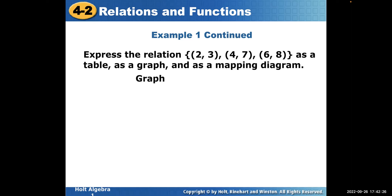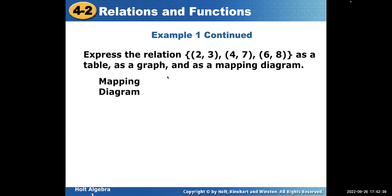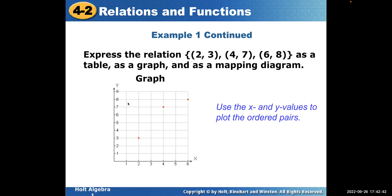Now let's graph it. Take the same points and plot them on a coordinate graph. The first number is X, so go where X is 2 and Y is 3 — where they meet, put a dot. The next one is (4, 7): go to X=4 and Y=7. And (6, 8): X is 6, Y is 8. The two points meet right there. It's kind of like Battleship.